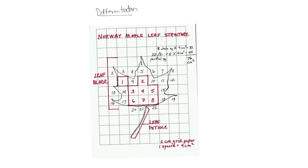We know that if it is a rectangle, we go for length times breadth. If it is a triangle, we go for half times base times height. But if you would like to find the area of an irregular shape — like the area of a leaf — first we have to plot it on a graph paper, where one square represents, say, one centimeter square. Then we count the number of such squares.